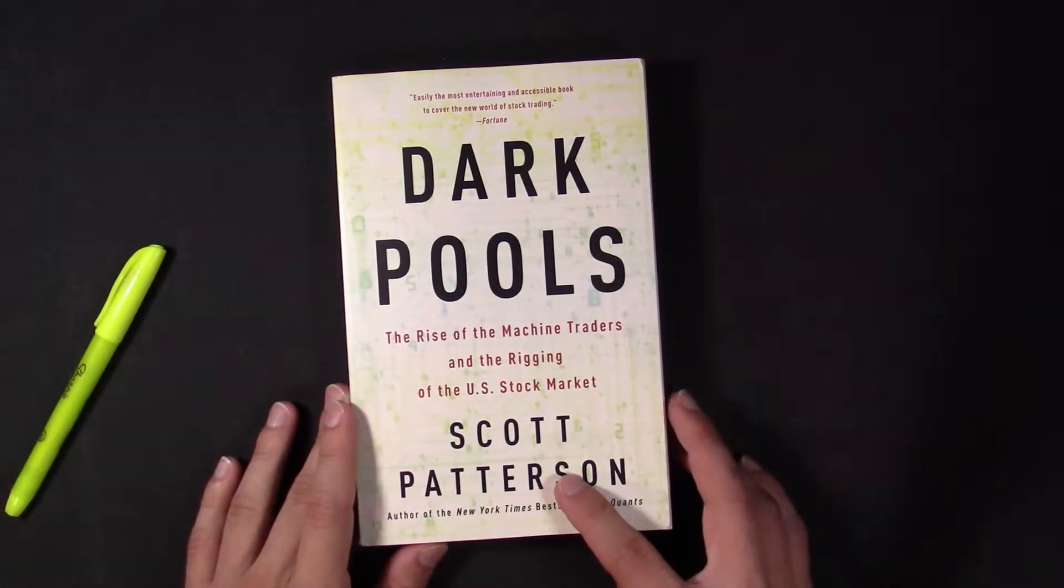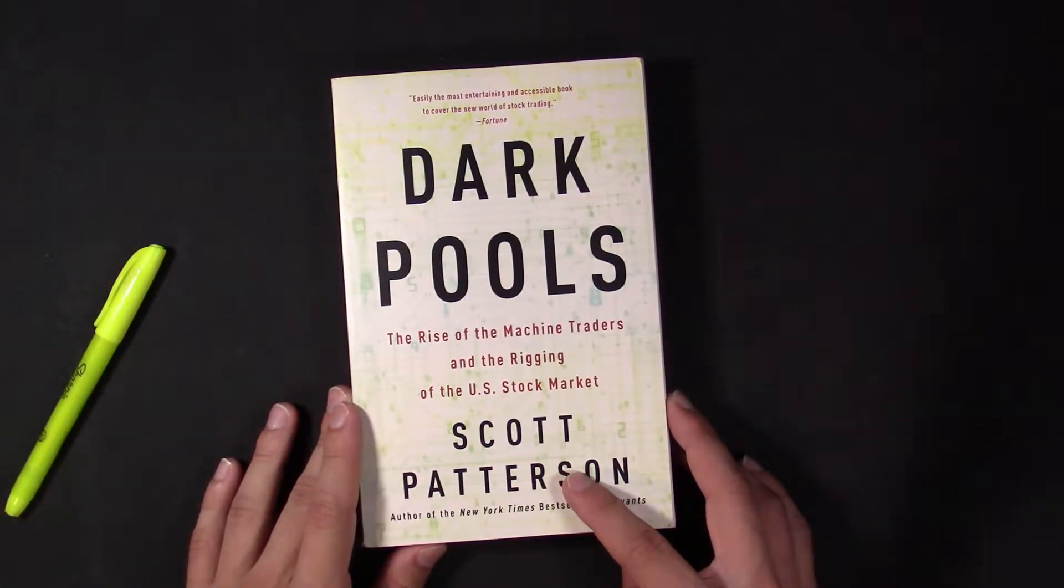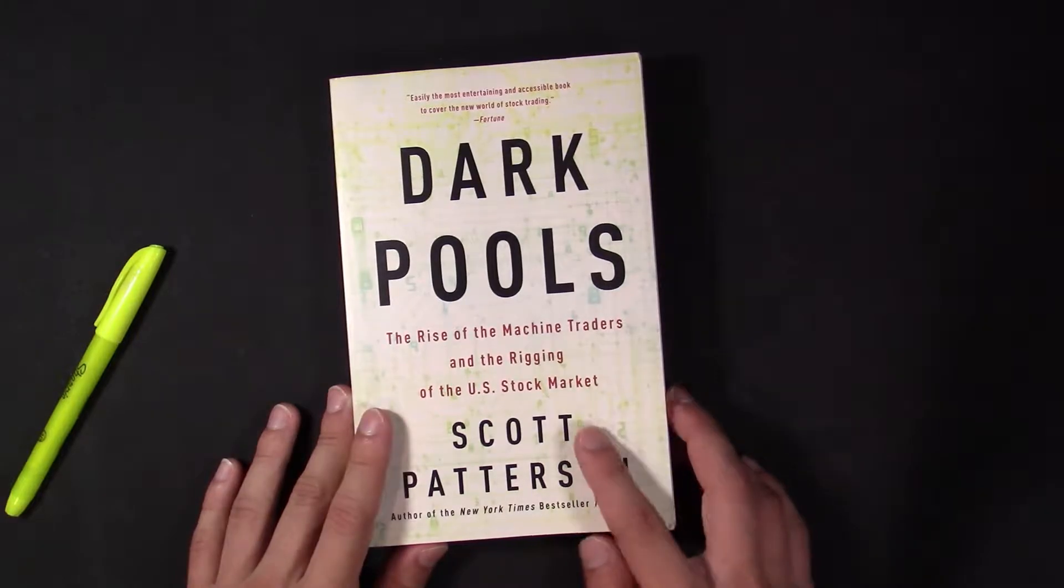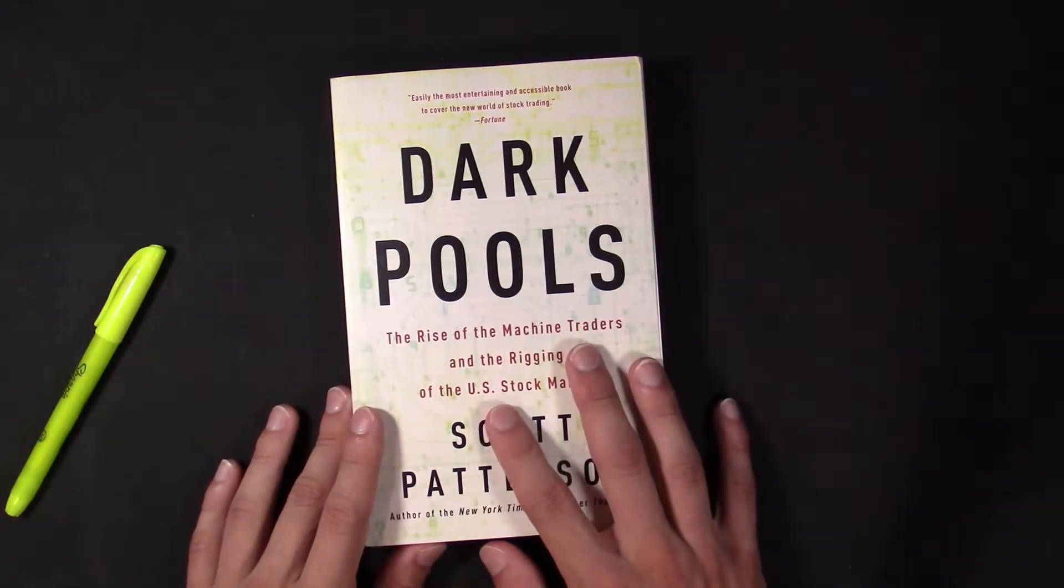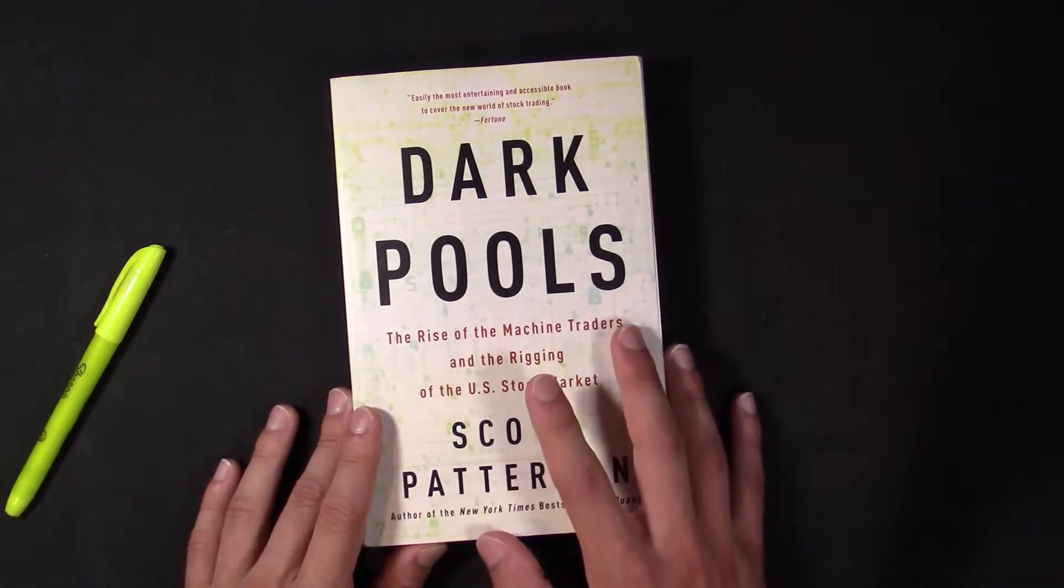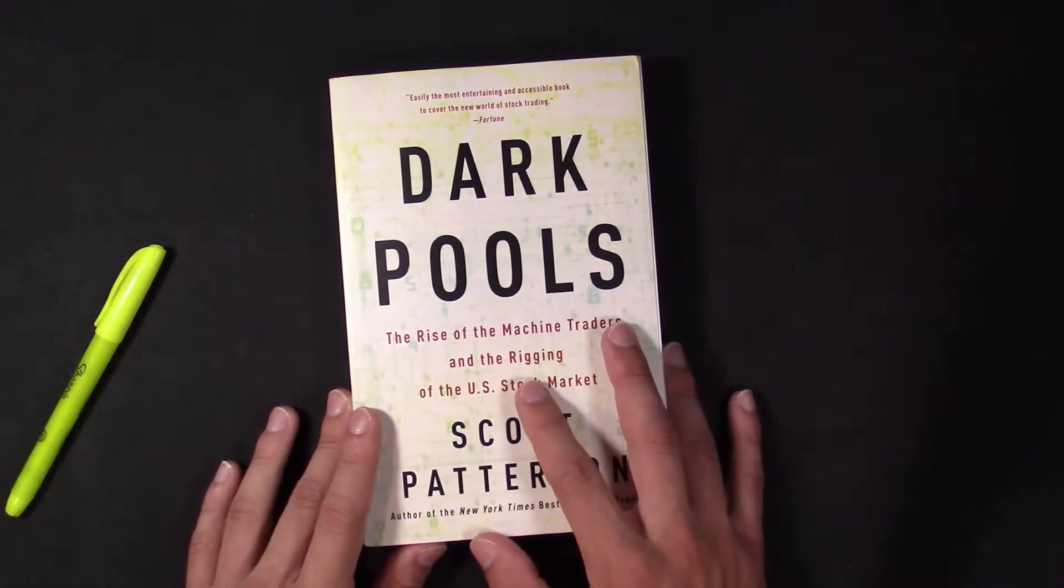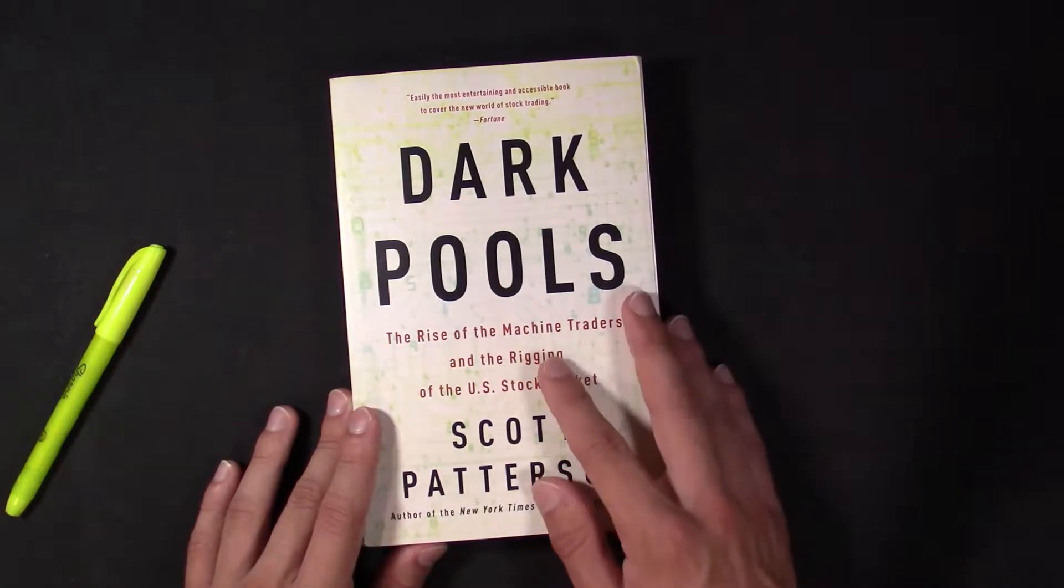Dark Pools by Scott Patterson is a book about AI and bot trading inside the stock market. Before reading this book, I knew that bots and AI had a significant impact in how trades and everything were executed.